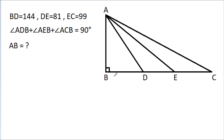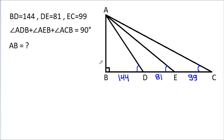In this video, we have given a right-angled triangle in which BD is 144, DE is 81, and EC is 99. And angle ADB, angle AEB, and angle ACB are each 90 degrees.